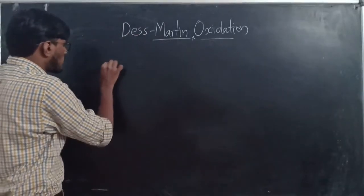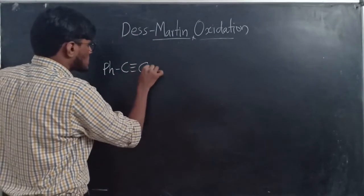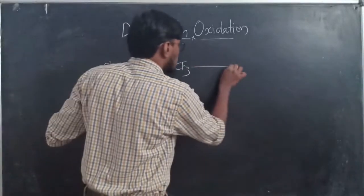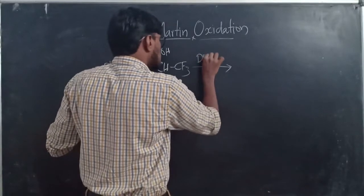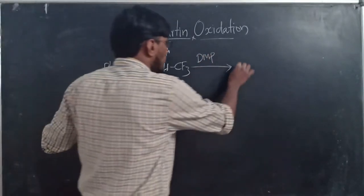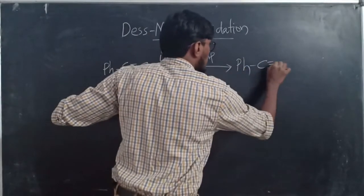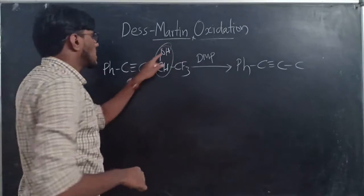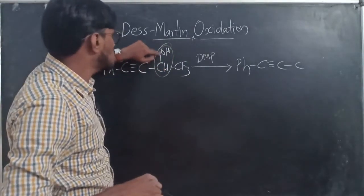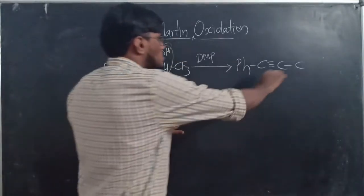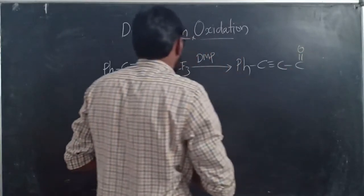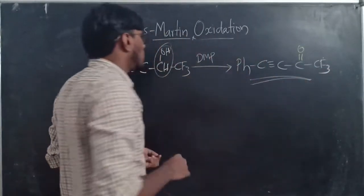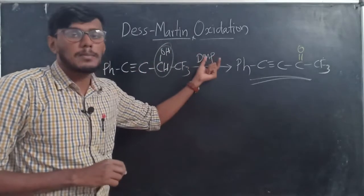Here is the first example: Ph–C≡C–CH(OH)–CF₃ reacted with DMP (Dess-Martin periodinane). The alcoholic group here is a secondary alcohol. On oxidation with DMP, it forms a ketone: Ph–C≡C–C(=O)–CF₃. The C=O ketonic group is the product.